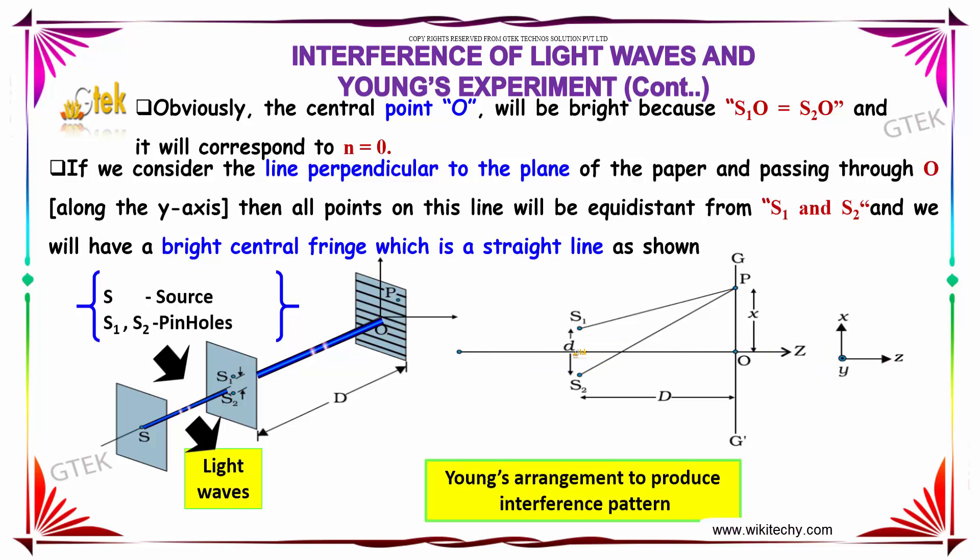If you consider the line perpendicular to the plane of the paper and passing through O along the y-axis, then all points on this line will be equidistant from S1 and S2 and will have a bright central fringe, which is a straight line as shown in the figure.